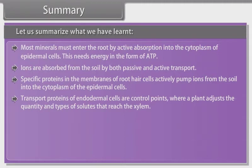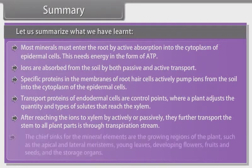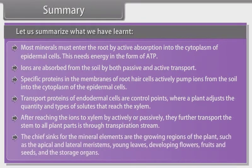Transport proteins of endodermal cells are control points where a plant adjusts the quantity and types of solutes that reach the xylem. After reaching the ions to xylem by actively or passively, the further transport up the stem to all plant parts is through transpiration stream. The chief sinks for the mineral elements are the growing regions of the plant, such as the apical and lateral meristems, young leaves, developing flowers, fruits and seeds, and the storage organs.